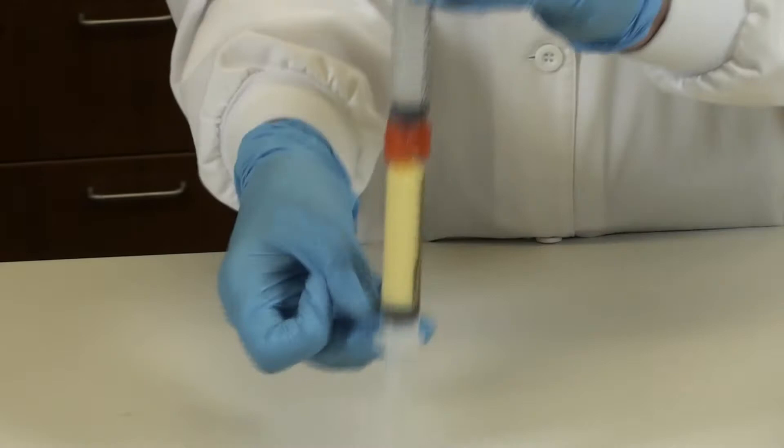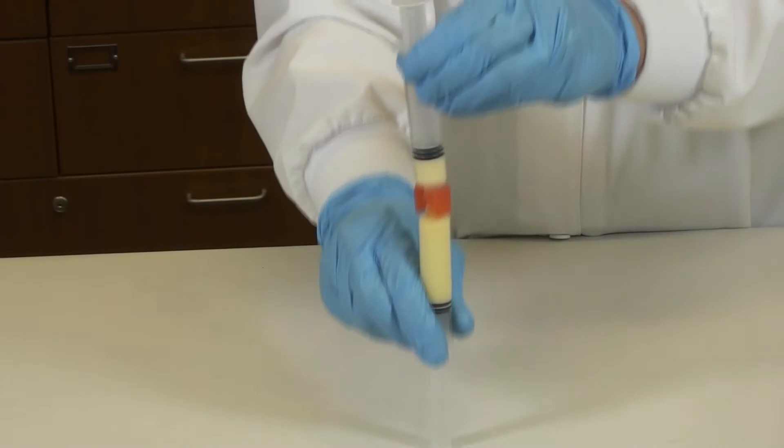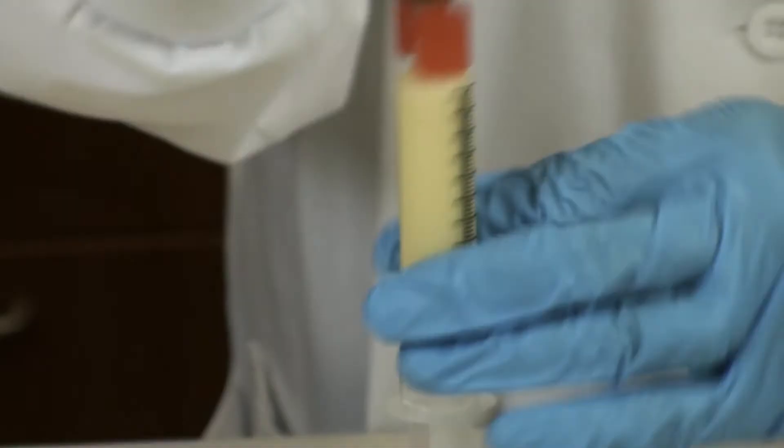Keep doing this and I recommend that you, if you want to count, it's probably about 50 times back and forth. Periodically check and make sure that both sides are still luer locked on and continue to do this until you have a uniform PLO gel.